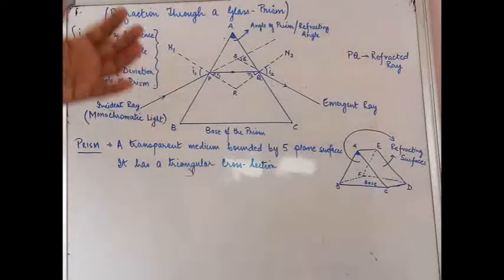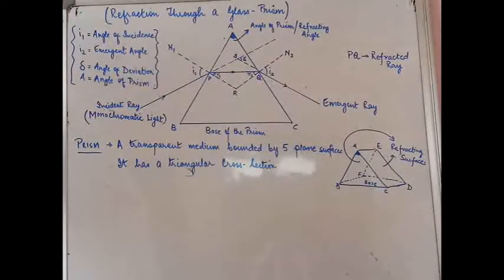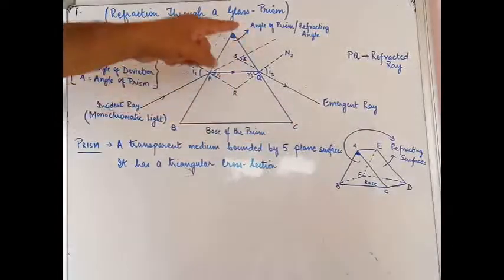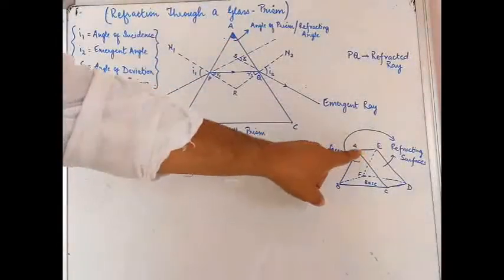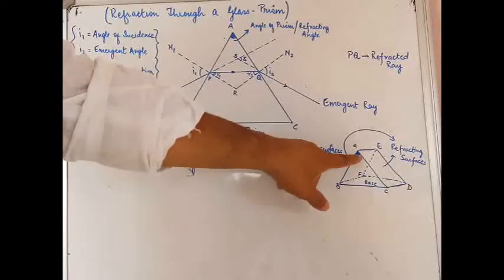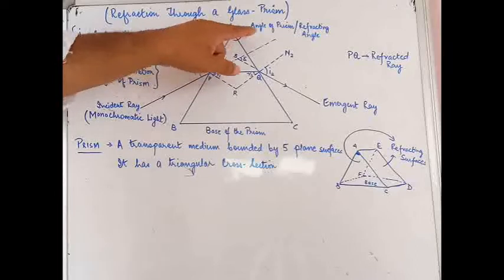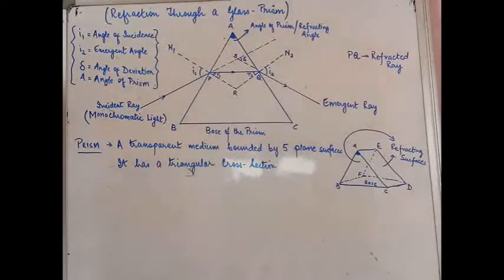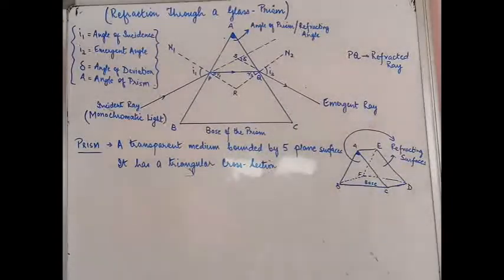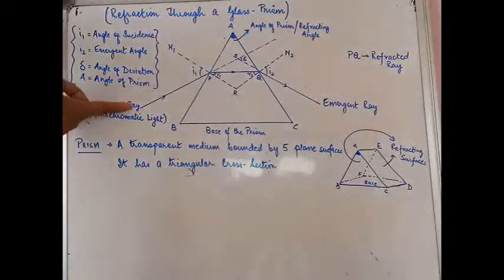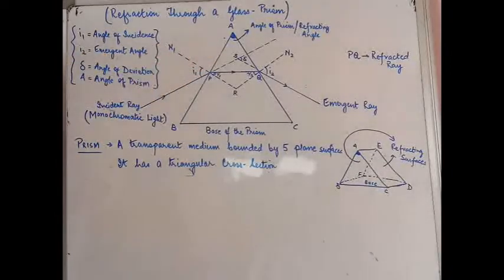Now we will go into the detailed study of how a ray of light is incident at one of the refracting surfaces. In this triangular cross section ABC, the angle A — the darkened angle A — is known as the angle of the prism, or the refracting angle. Depending upon the shape of the prism, this angle A can vary — it can be 60, 90, 45, and so on. I have drawn the diagram beforehand to save time, showing an incident ray traveling in this direction.